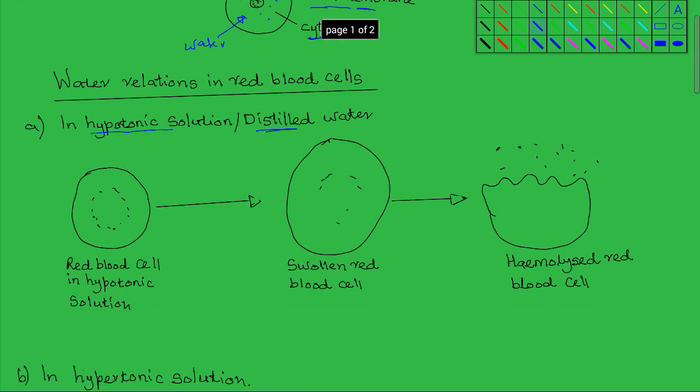Now hypotonic solution means that the solution has a higher water concentration compared to the cytoplasm within the red blood cells. When a red blood cell is placed in such a hypotonic solution, the red blood cell is hypertonic to the surrounding solution. This results in a net gain of water.